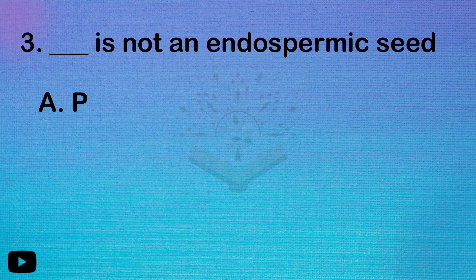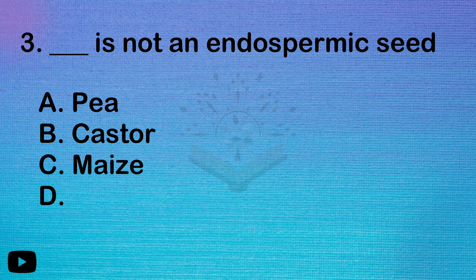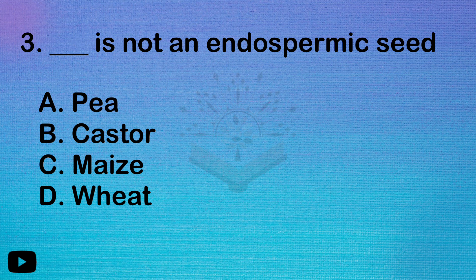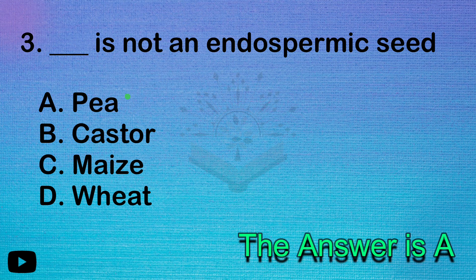The next question: dash is not an endospermic seed. These seeds consume the endosperm during development — they are non-albuminous seeds. The answer is a direct NCERT question, so look at the examples of non-albuminous seeds.